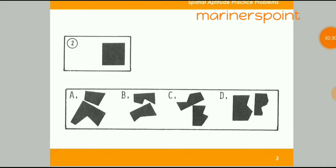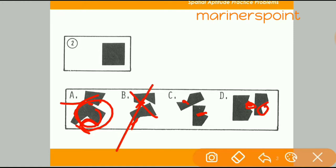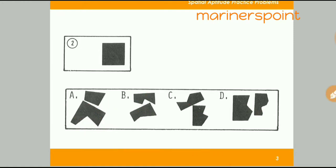In the second question, you have to complete a square. The basic trick is you have to complete the figure. Try to catch this key point — when you see this position and this position, they are equal in distance, so the answer will be A. But we will check the other options. Option B will not fit here properly, and option C is not correct either.